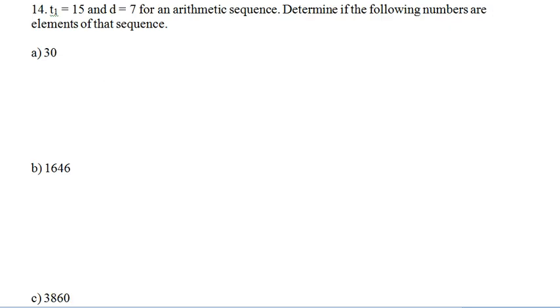And, lastly here, they've given us T1 is 15. And, D is 7 for an arithmetic sequence. And, they want to know if the following numbers are elements of that sequence. Well, for the first one, it should be pretty easy to see. We'll have 15, 22, 29, 36. So, 30 is going to be in between 29 and 36. So, it's not going to be part of the sequence. So, no. That number is not part of the sequence.